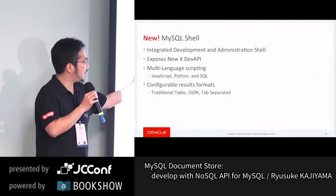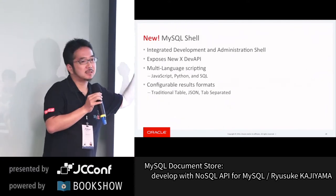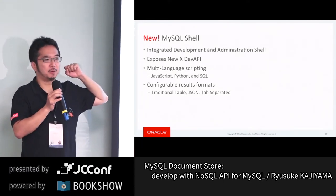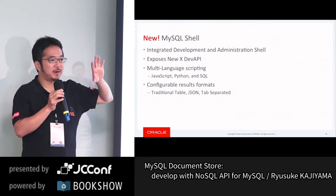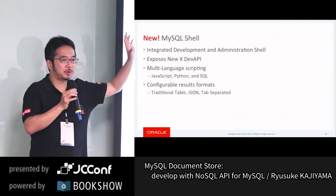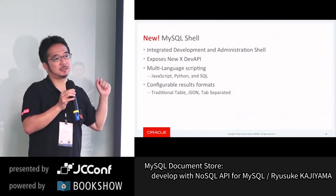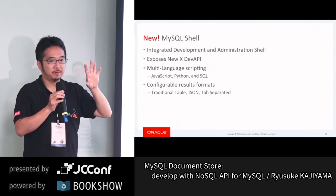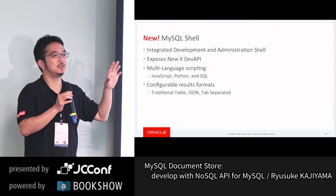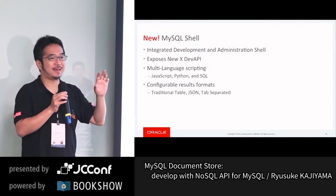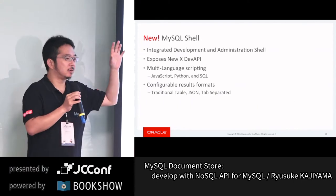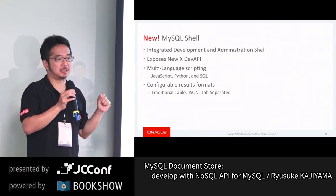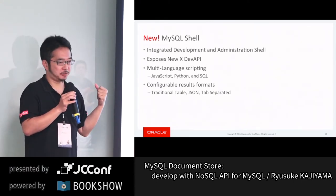In XDEV API, the real example I'll show is that between different programming languages, we try to have a really similar format — usually the same method chain format among different programming languages to create applications.